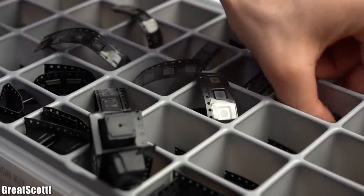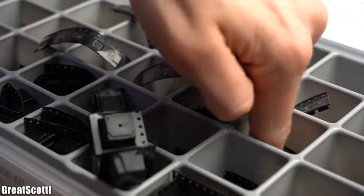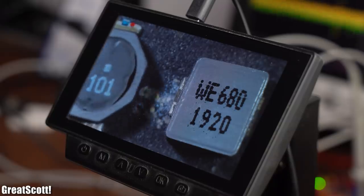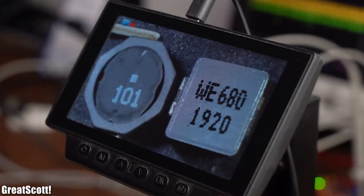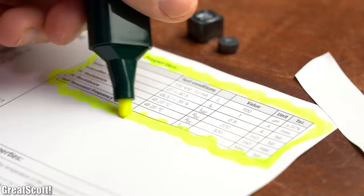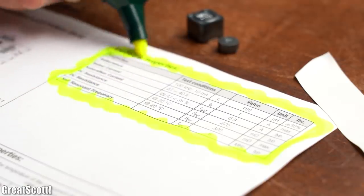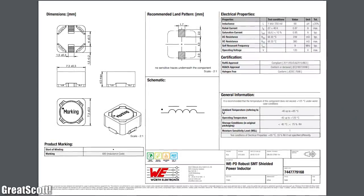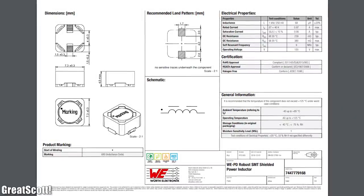But nevertheless, I hope that I was able to give you a small insight into the world of coils and that you now understand that the inductance value is not the only important property. There is for example also the coil resistance and the magnetic saturation current. And most of the time a small look into the data sheet of a coil can be very helpful.